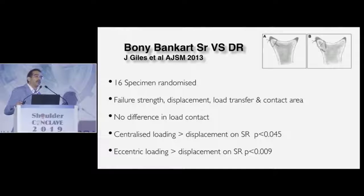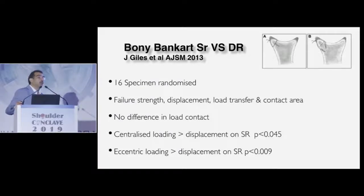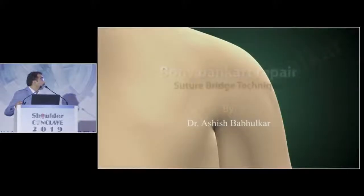This is one of the few studies focused on the bony Bankart. Joshua Giles, with 16 cadaveric specimens, did a biomechanical study and found no difference in load contact between a point fixation and a double-row fixation. However, in the initial fixation, it was statistically significant that on eccentric loading, the double-row suture bridge repair was much more resolute, stronger, and enduring than the single-point fixation.